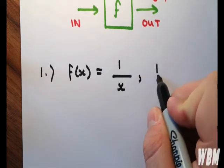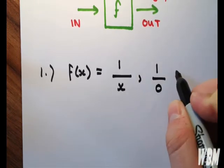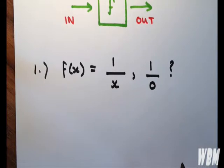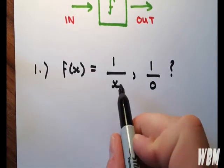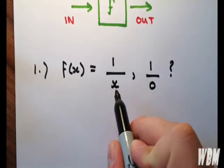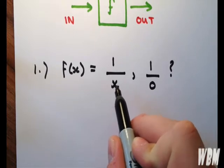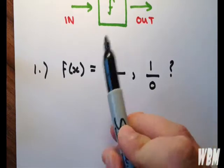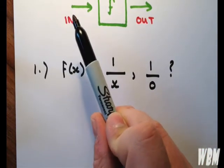1 over 0 doesn't really work out as anything. It's one of those mathematical anomalies. So you want to make sure that if you have a fraction, the denominator doesn't equal 0. Any number that will provide you with a 0 in the denominator, you want to take out of your domain.